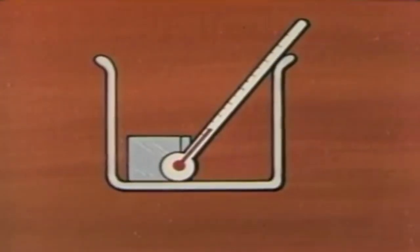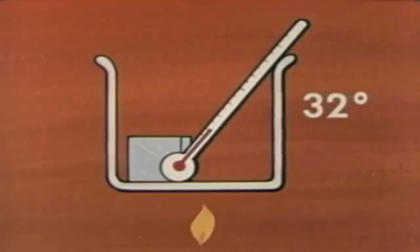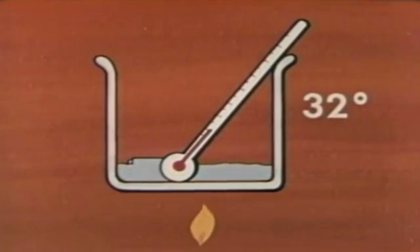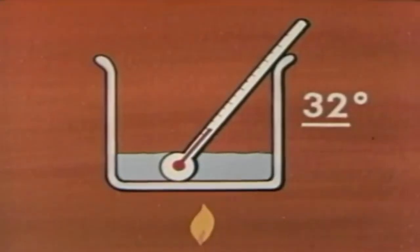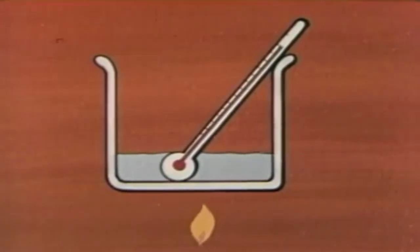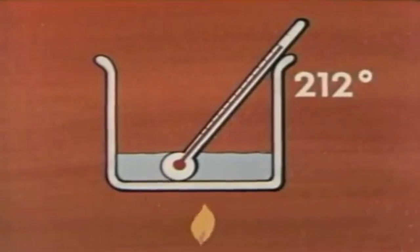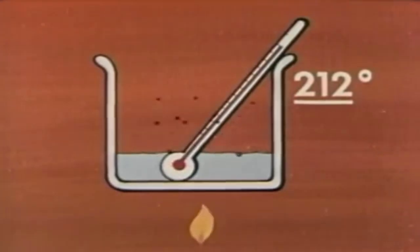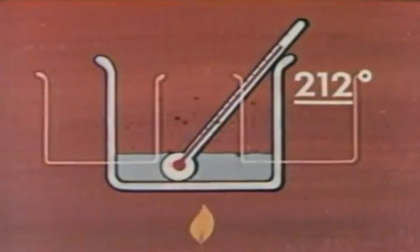Now, let's see what happens to temperature if you apply heat to ice. The thermometer reads 32 degrees Fahrenheit. As the ice changes to water, the temperature stays constant at 32 degrees. The heat is causing the change of state from solid to liquid. Then, as you continue to heat the water, the temperature increases until it reaches 212 degrees. The water starts to boil, and the temperature remains at 212 degrees. Heat from the flame is now being used not for a change of temperature, but for the change of state.